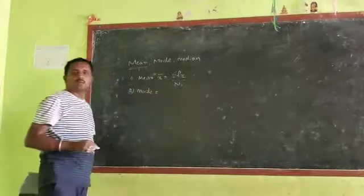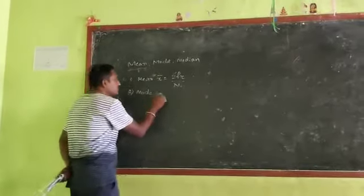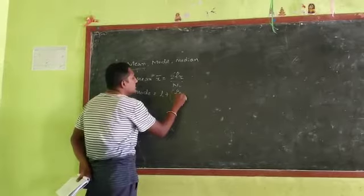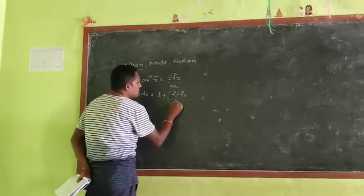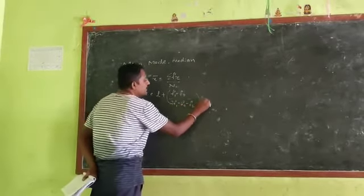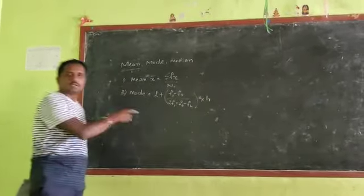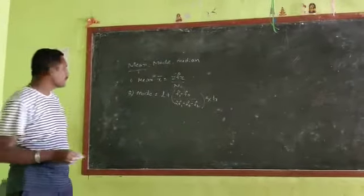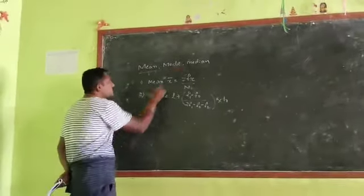What is the formula of mode? Mode = L + (f1 - f0)/(2f1 - f0 - f2) × h. This is the formula. Next, the third one is median.